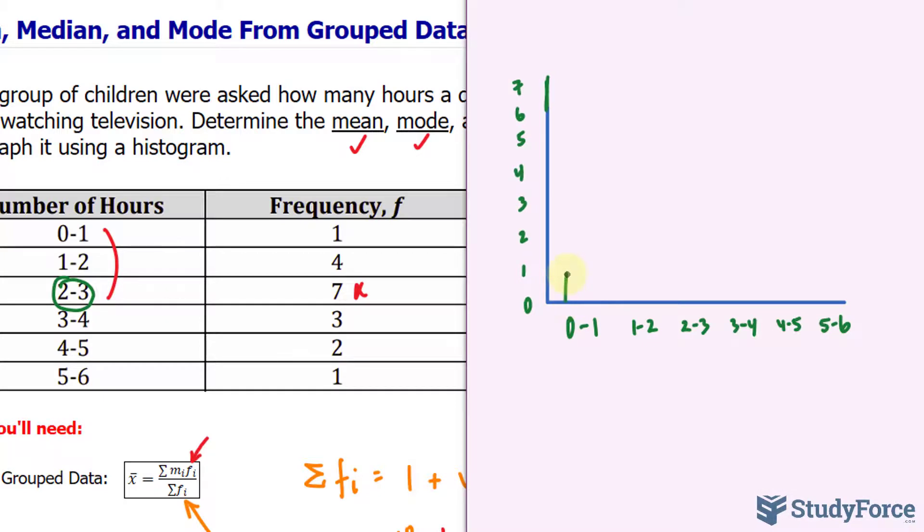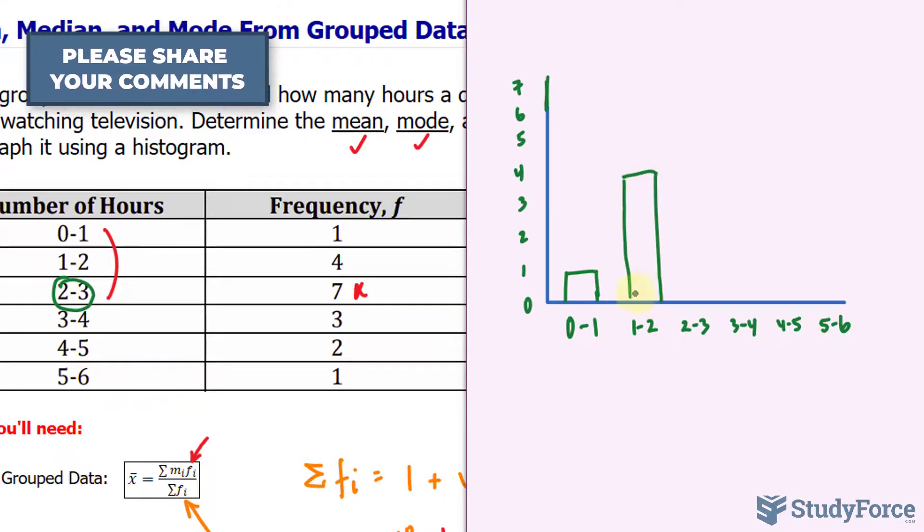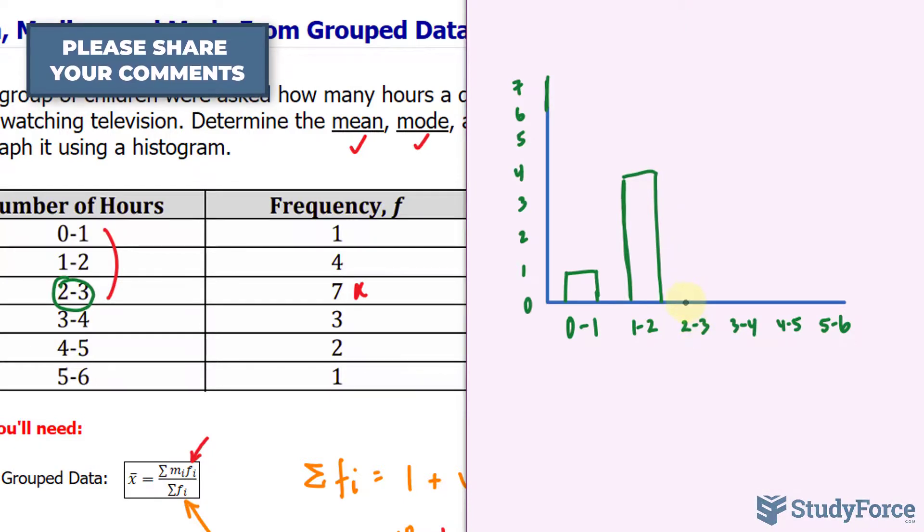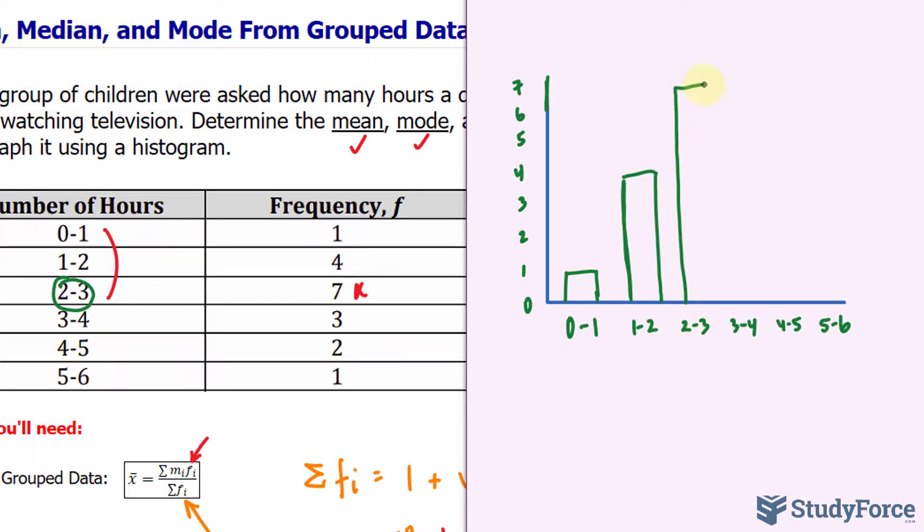Between 0 and 1, it goes to 1. 1 and 2, it extends to 4. Of course, if you were doing this on graph paper, it would be a lot more convenient. 2 to 3 is the maximum, 3 to 4 is 3, 4 to 5 is 2, and 5 to 6 is 1. You would give it a title and you'd be good to go.